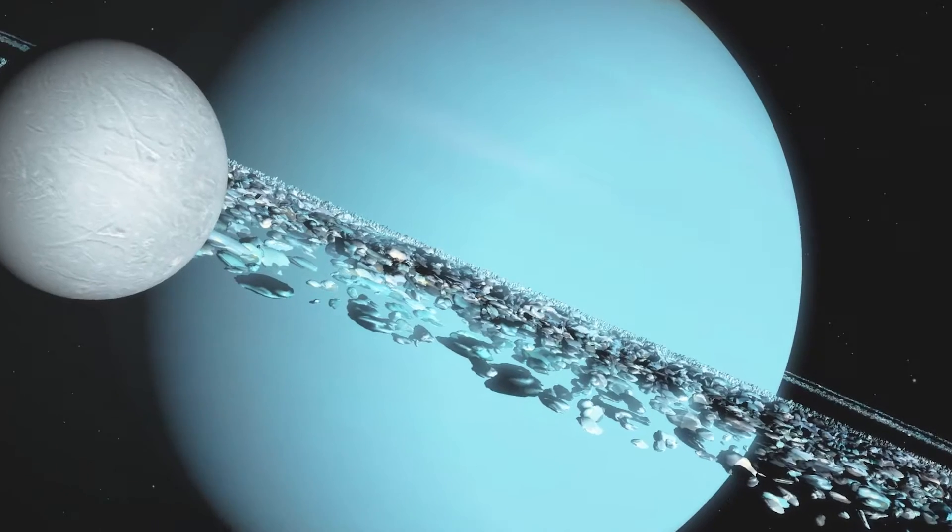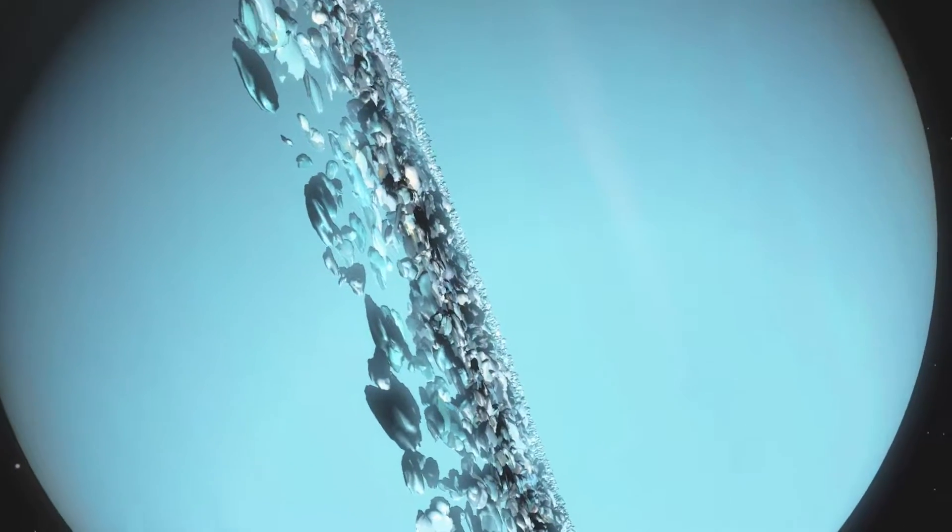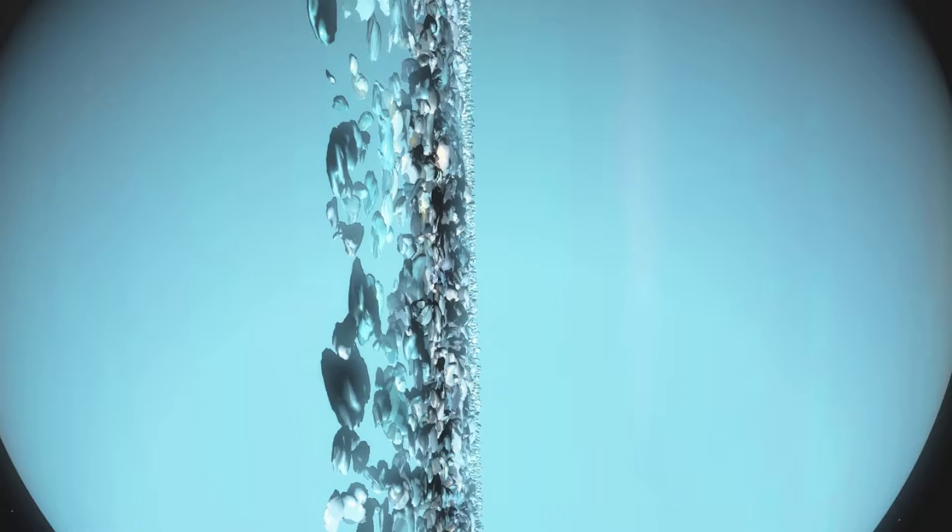Uranus, for an unknown but deeply hypothesized reason, is completely tilted to its side, so it is virtually spinning sideways.